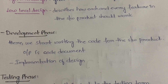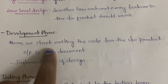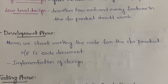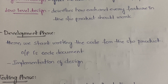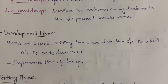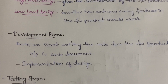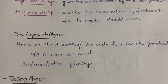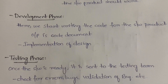Next is the development phase. Here we finally start writing the code related to the software. Software is a collection of programs, so you have to start writing the code. The development phase is also called the implementation phase — it is the implementation of the design.